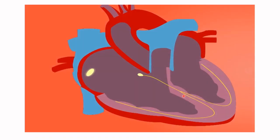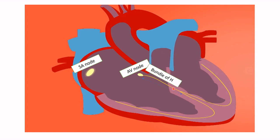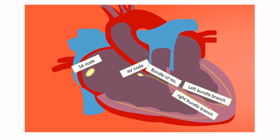Now let's see the conduction system of the heart. We start with the SA node, or sinoatrial node, then the AV node, or atrioventricular node, then the bundle of His. Then we see the bundle branches: the left bundle branch and the right bundle branch. And finally we see the Purkinje fibers — left and right Purkinje fibers.